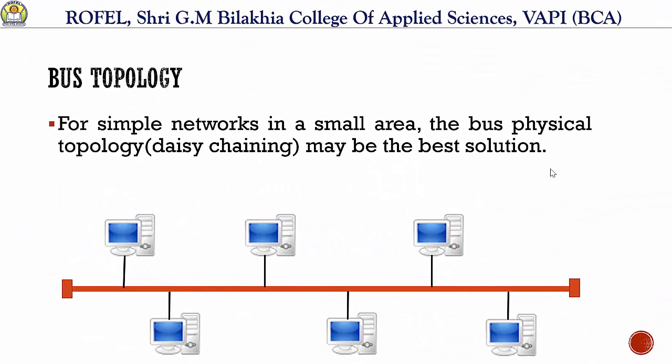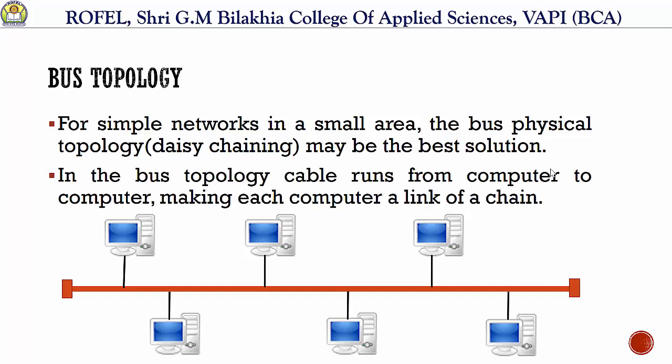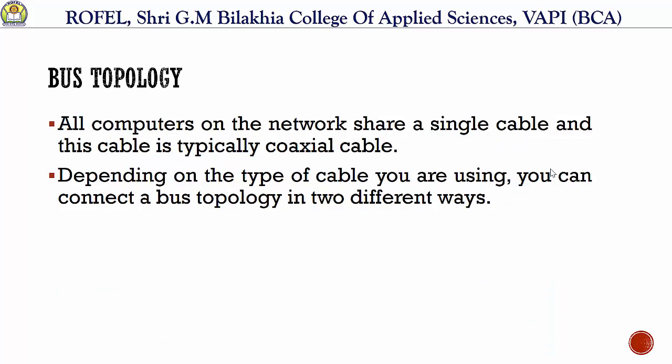For a simple network in a small area, the bus physical topology may be the best solution. Another name for it is daisy chaining. So if you want to arrange a small network, bus physical topology is the best solution. In bus topology, the cable runs from computer to computer, making each computer a link in a chain — as described in the diagram here, all computers are connected with a single cable.